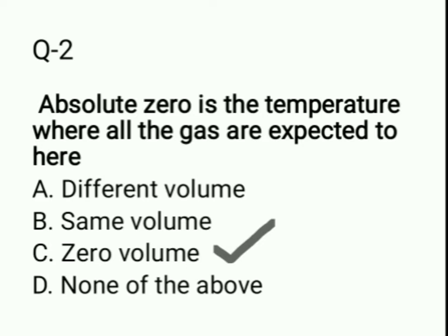Question 3: The Joule-Thomson coefficient for an ideal gas is — option A: zero; option B: one; option C: less than one; option D: greater than one. Please note down your answer.